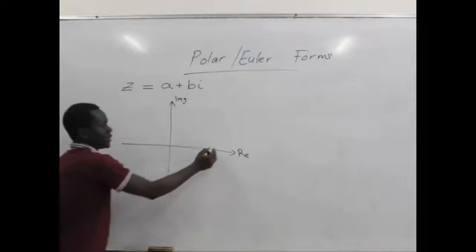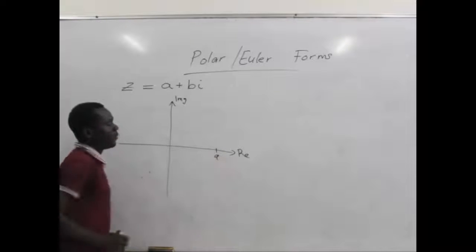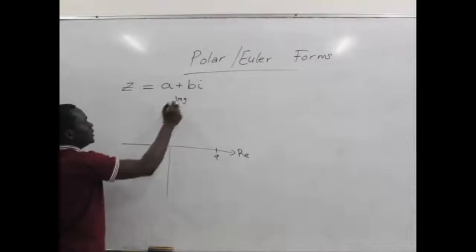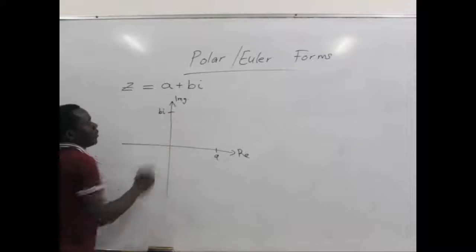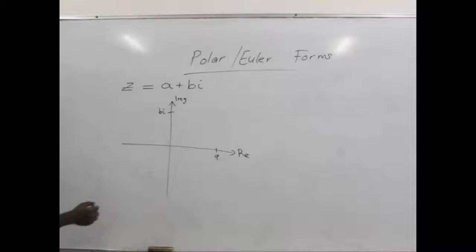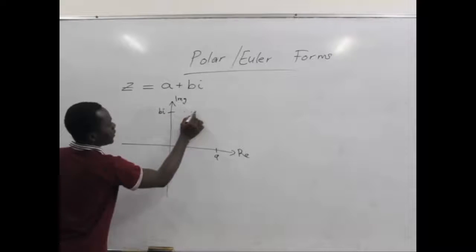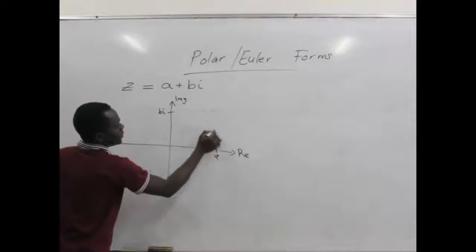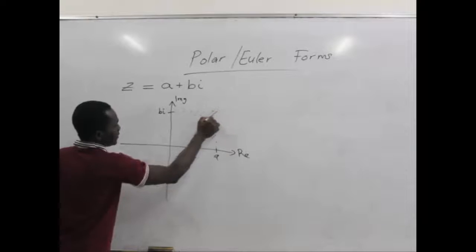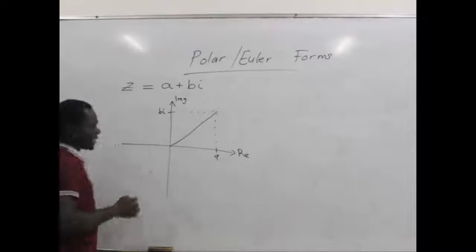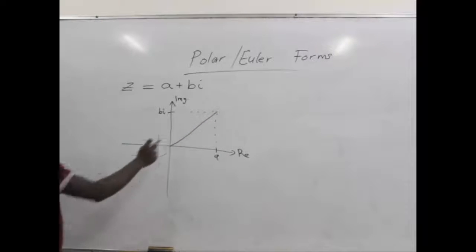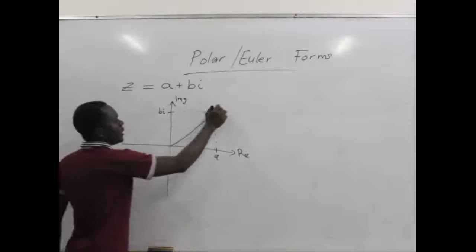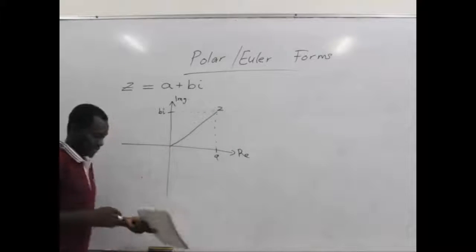So we plot the A, which is the real part, on the real axis and the B on the imaginary axis. And we know these two points meet there and give us a complex number Z.